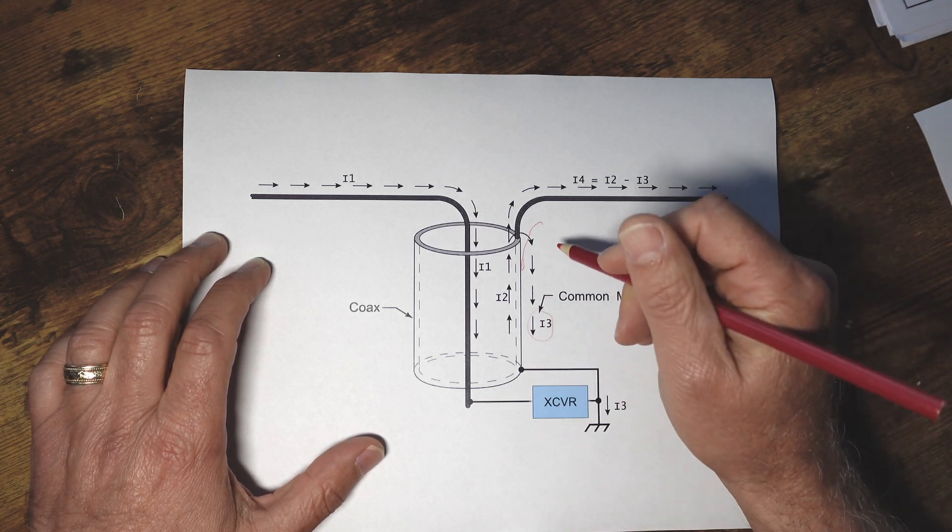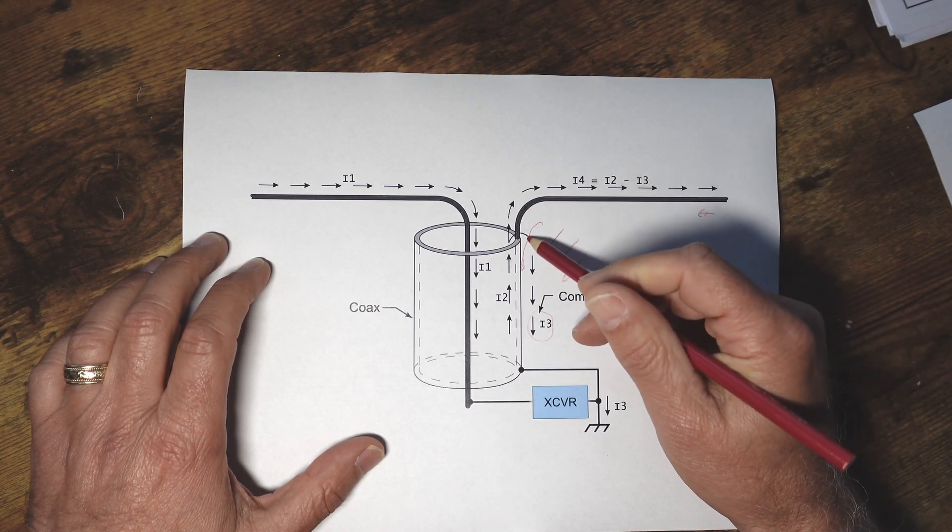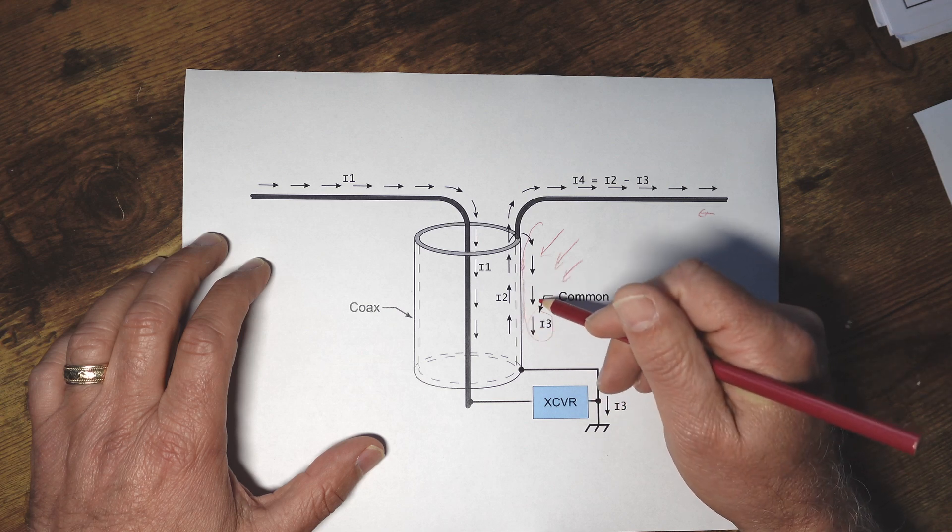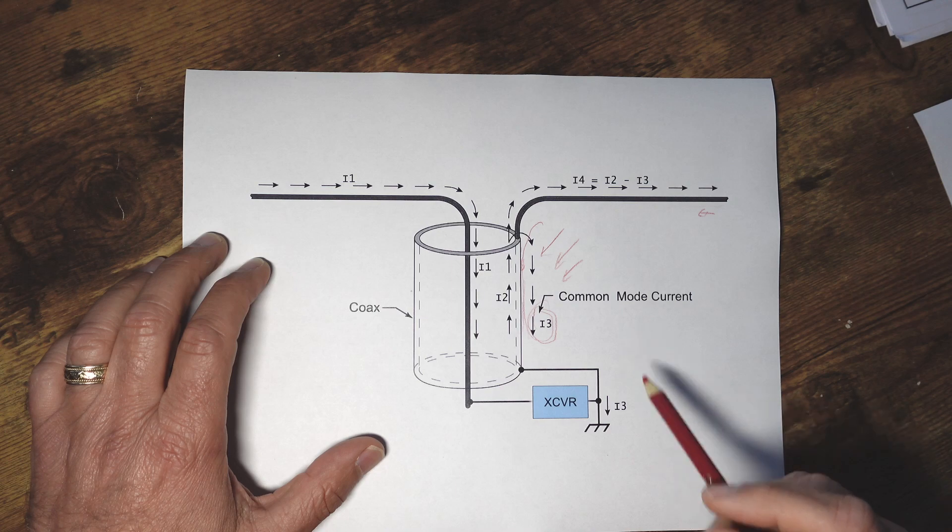On the received side of course you have all kinds of RF coming in, RFI etc, and that ends up going on the outside and that adds to I3 which of course on the received side the transceiver is going to see.